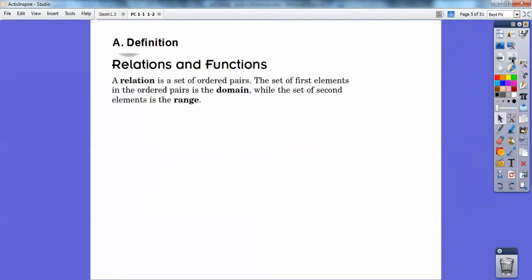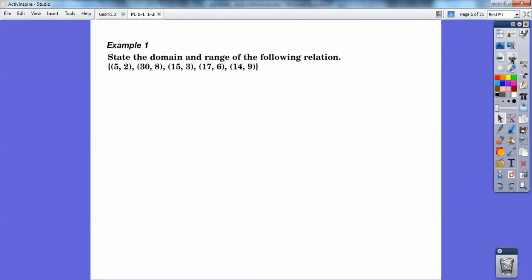Relations and functions. A relation is a set of ordered pairs, x, y pairs, and the first numbers are called the domain. The x's are the domains, and the second numbers are the y's. They're called the range.